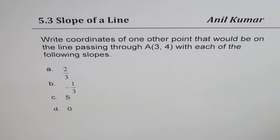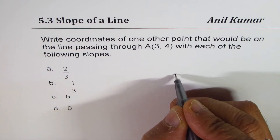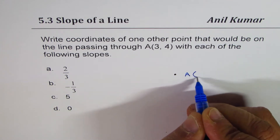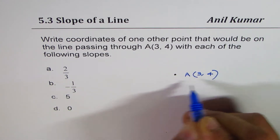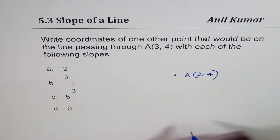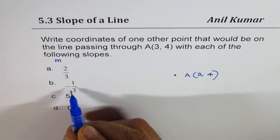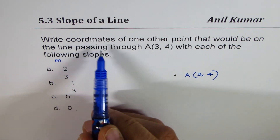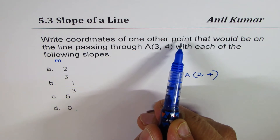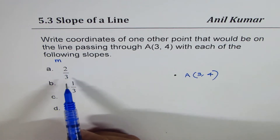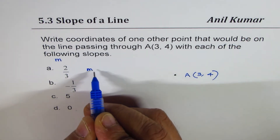Let's begin by placing point A — let's say this is the point A with coordinates (3, 4). I'm not doing it on graph paper; I'm keeping it flexible, it helps me explain better. These are all the slopes — M for four different lines is given here. We need to write coordinates of one other point that would be on the line with the given slope. Let's begin with 2/3.